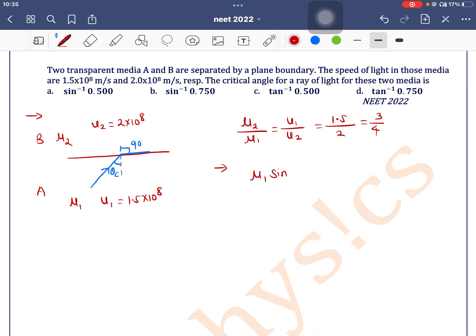That is μ₁ sin(θc) equals μ₂ sin(90°). Now we can write sin(θc) equals μ₂/μ₁. So what is μ₂/μ₁? Here, μ₂/μ₁ is